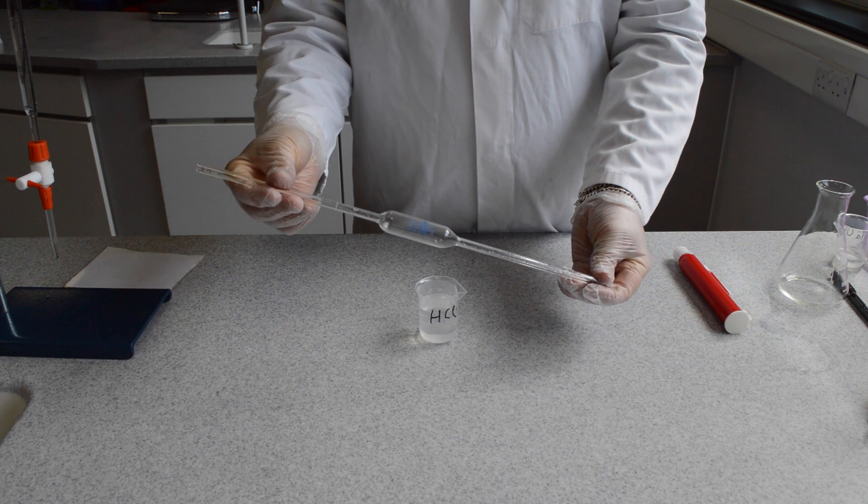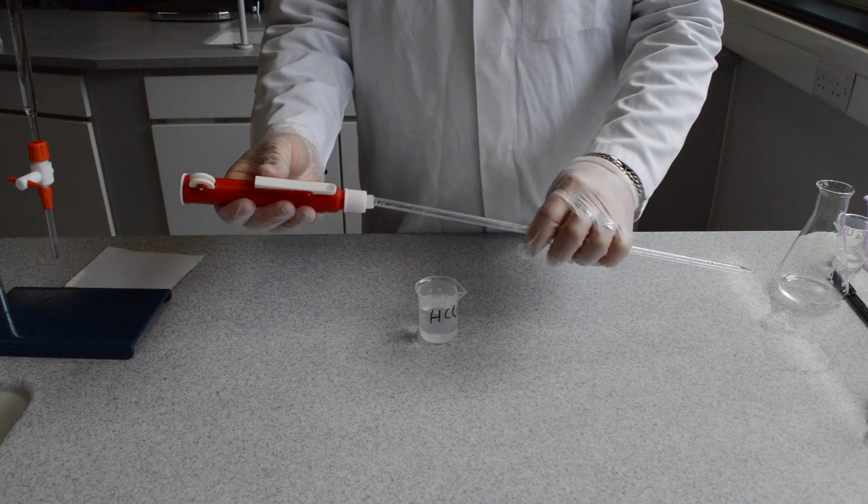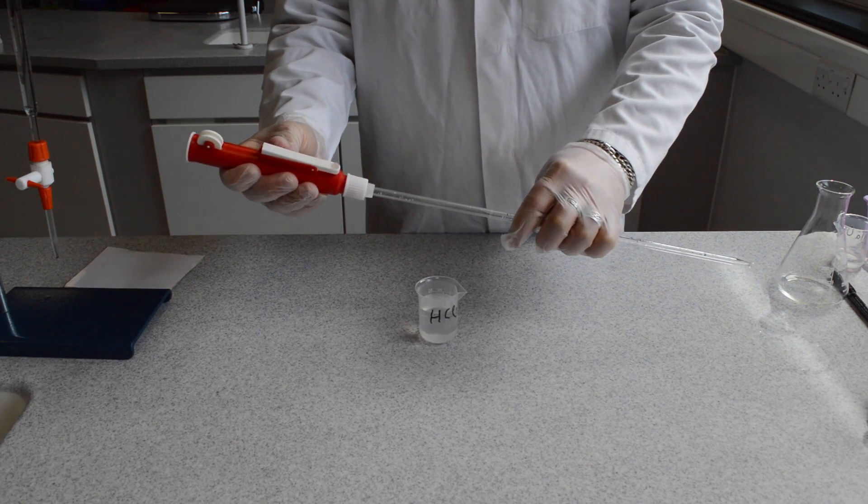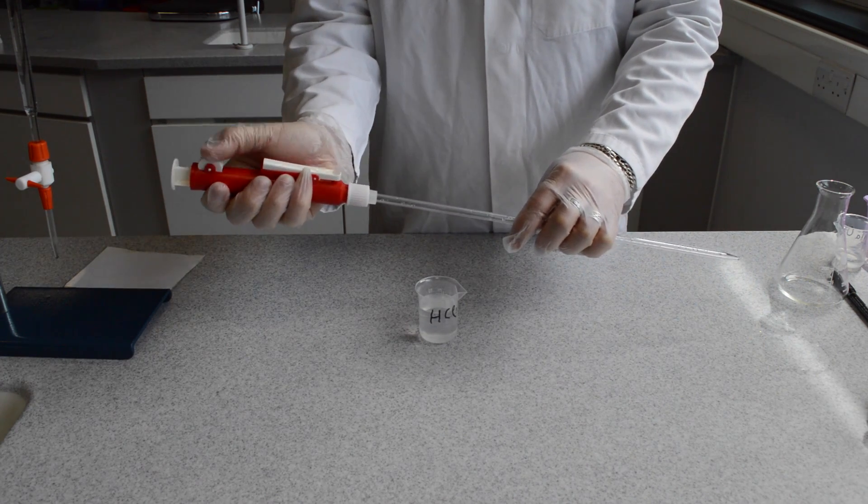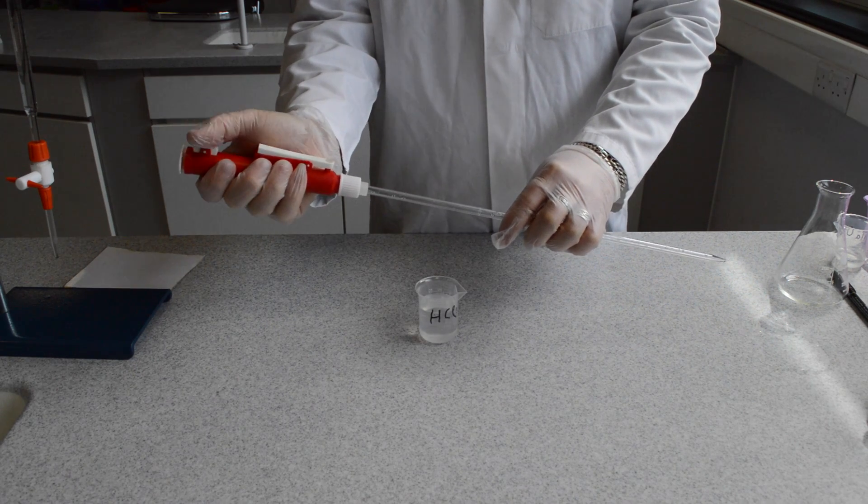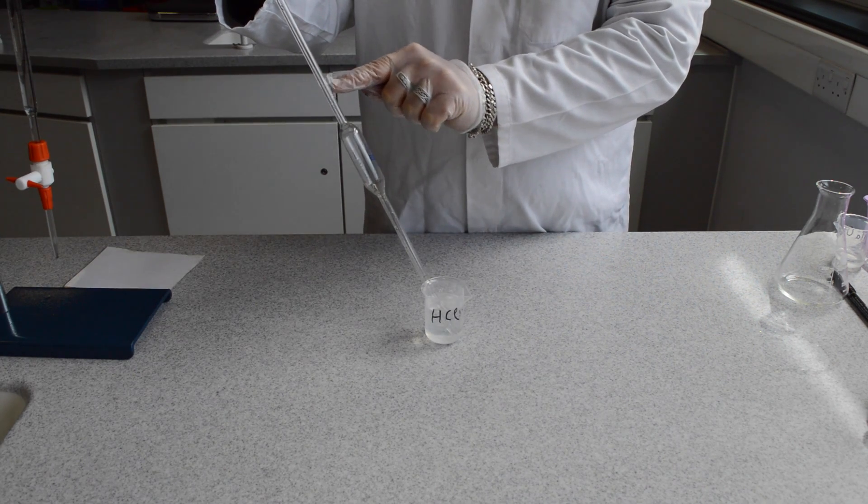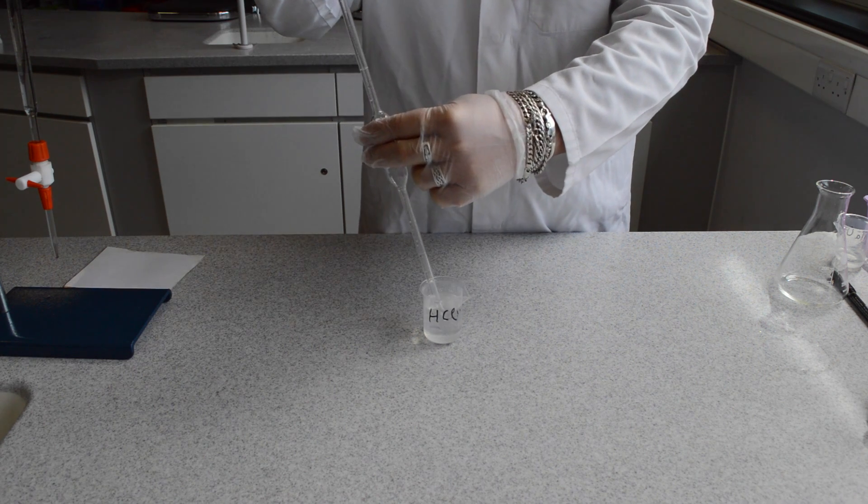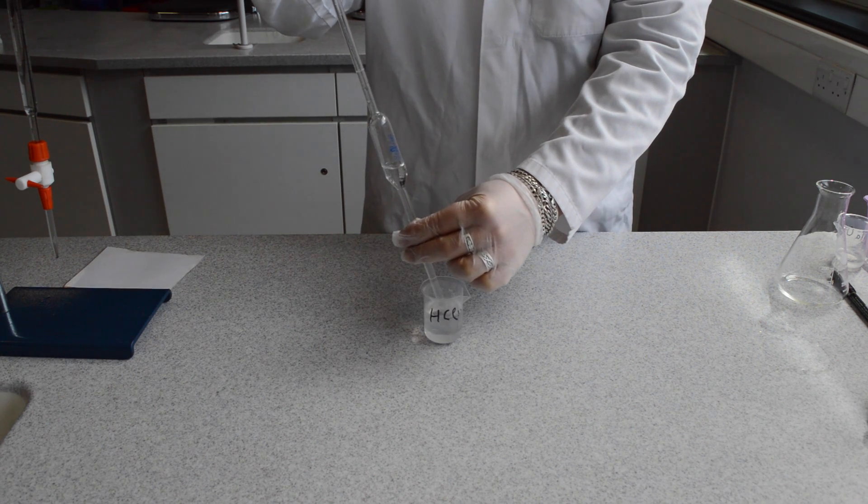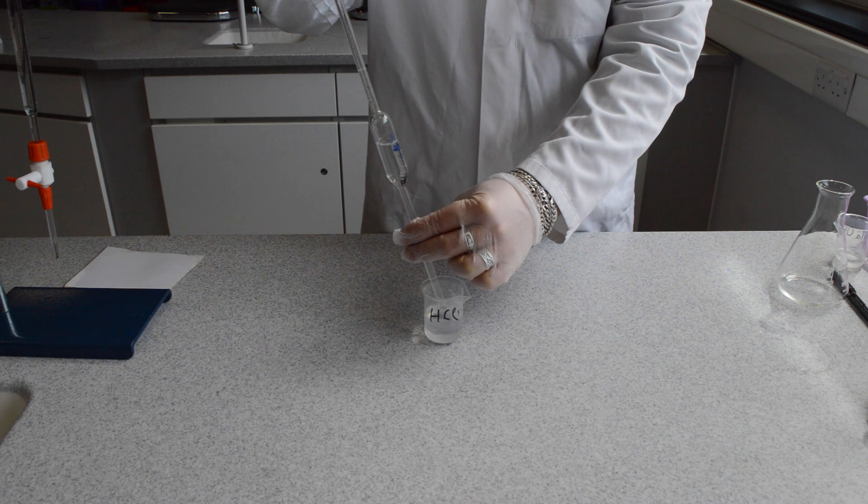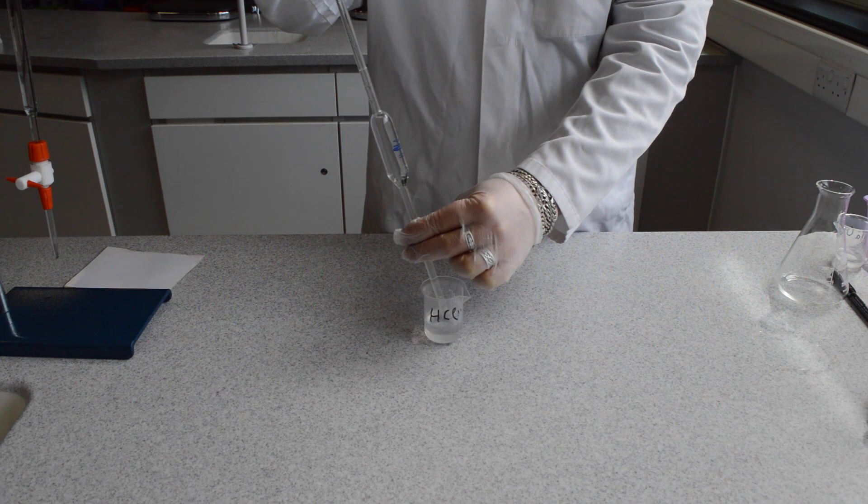The initial stage of performing the titration is to draw up an accurate quantity of hydrochloric acid using the pipette filler and the pipette. There is a mark on the pipette that accurately indicates 25ml. Fill up your bulb pipette slowly and carefully using the pipette filler to this mark.